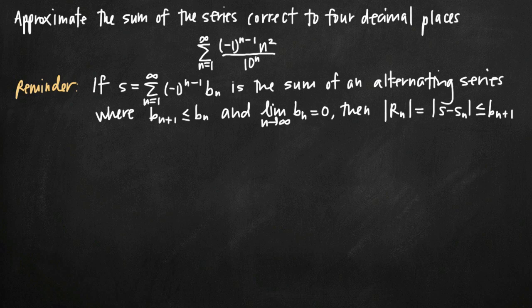Today we're going to be talking about how to use the alternating series estimation theorem to approximate the sum of the series and to find the remainder of the approximation. In this particular problem we've been given the infinite sum from n equals 1 to infinity of the quantity negative 1 raised to the n minus 1 power times n squared divided by 10 to the n power. We've written the alternating series estimation theorem for reference, and we really only need it to find the remainder term r sub n.